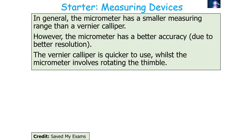In general, the micrometer has a smaller measuring range than a vernier calliper. However, the micrometer has better accuracy because it has a higher resolution. The advantage of the vernier calliper is that it is quicker to use, while the micrometer is more fiddly — it requires rotating the thimble and is more challenging to use accurately, as you can easily introduce a zero error or indent the material if you over-rotate and clamp the object too tightly.